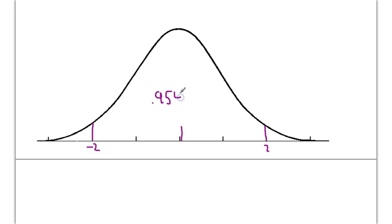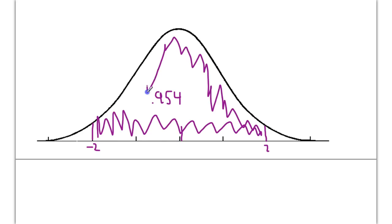0.954. And what this represents here is the area under the curve between negative two and positive two standard deviations. So I'll just color this in real quick. Negative two and positive two standard deviations. And if I wanted to say how confident I was that a randomly chosen value is going to fall in between those, I would say 95.4% confident that that's going to happen.